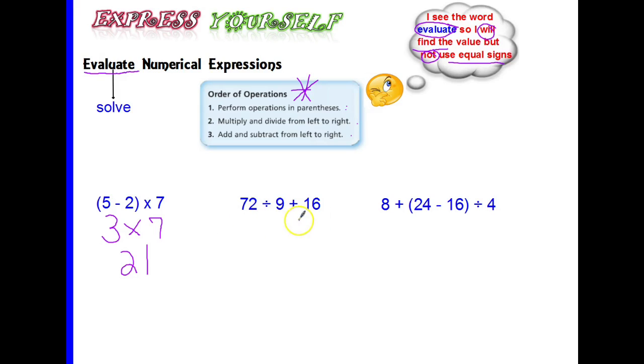Let's look at 72 divided by 9 plus 16. We do not see parentheses but we do see that there is division. And we're going to do this division part first. So 72 divided by 9 is 8, plus we have 16, so we keep our plus 16, and now we just add 8 plus 16 to get 24.